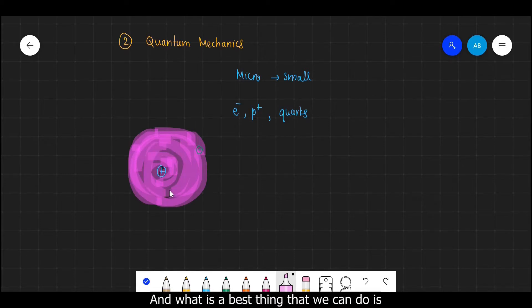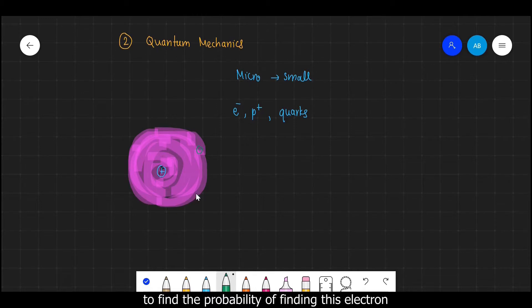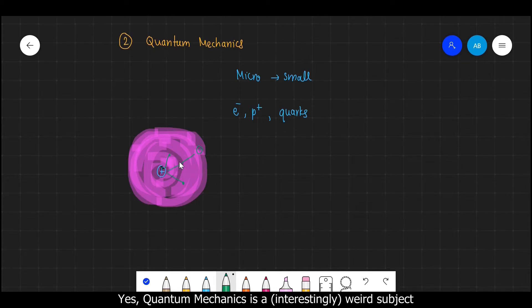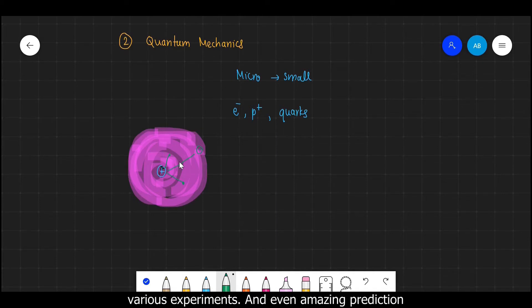And what is the best thing that we can do is to find the probability of finding this electron at some particular position. So if we make an observation, then we will say that to find an electron at this point, the probability is 0.05, or at this point it is 0.5 like this. So yes, quantum mechanics is a weird subject, but the results of quantum mechanics have been verified through various experiments.